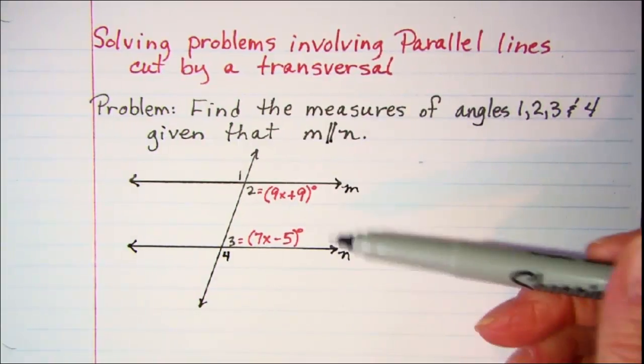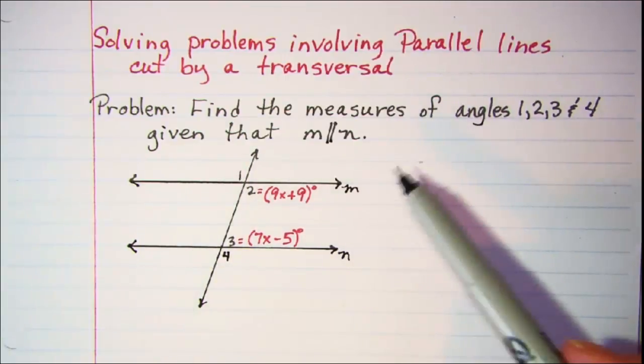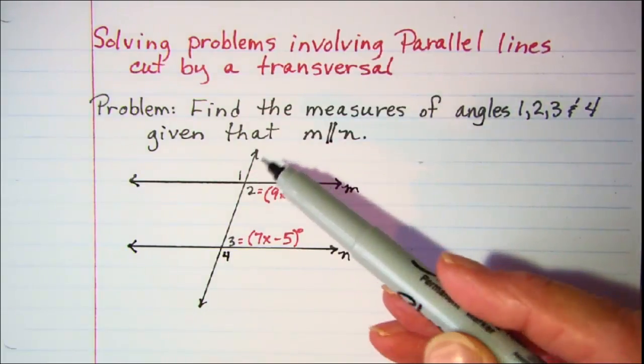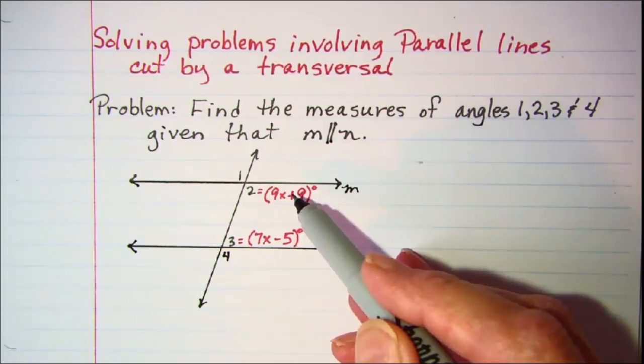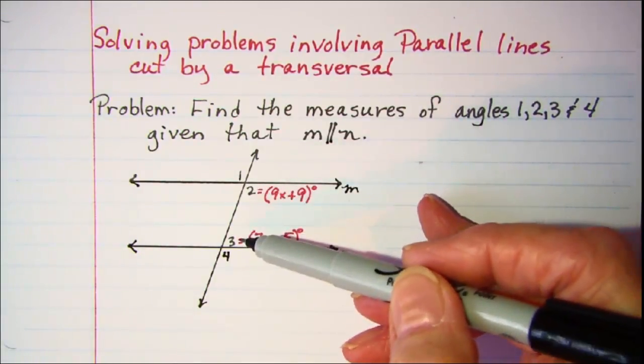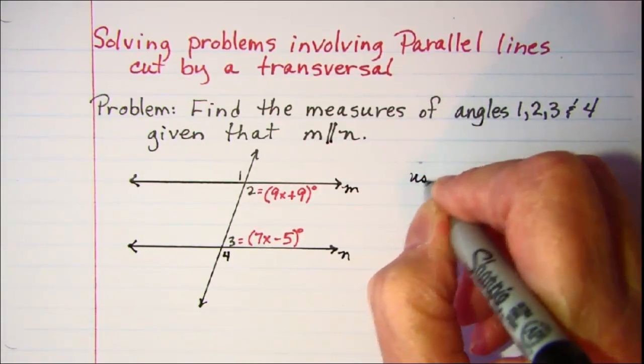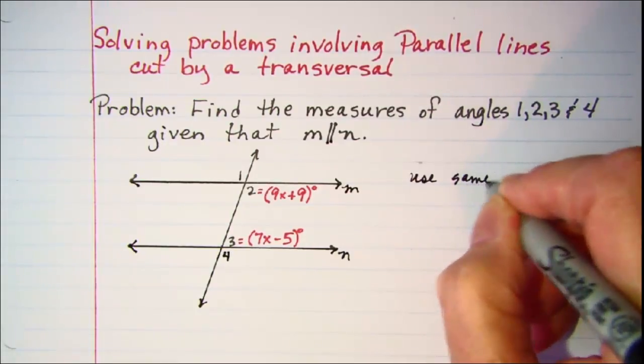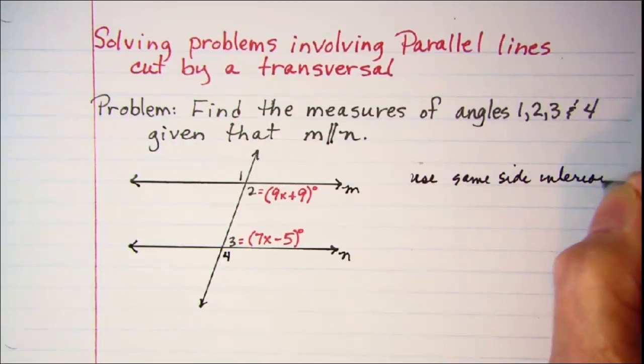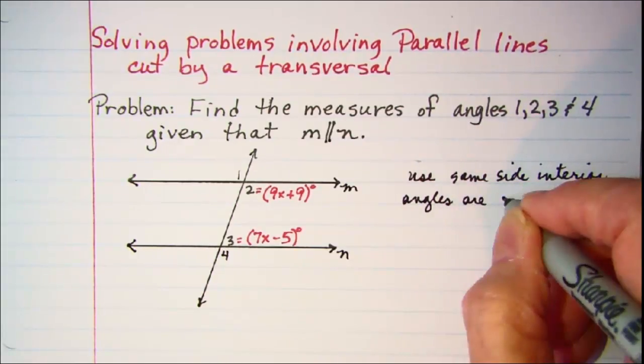So we have these two lines cut by this transversal. Whenever you have parallel lines cut by a transversal, you know that you have angles that are congruent. We'll be using for this problem the theorem that says same side interior angles are supplementary.